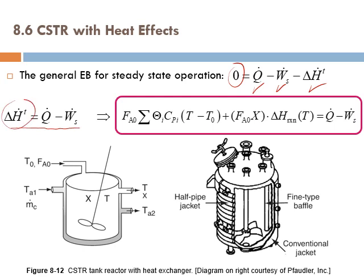If we expand ΔH, we heat the feed from T0 to T (theta_i terms), and then run the reaction at T. Multiplying by the number of moles reacted, this equals Q̇ minus the shaft work. Here we also see some nicely jacketed CSTRs for heat exchange.